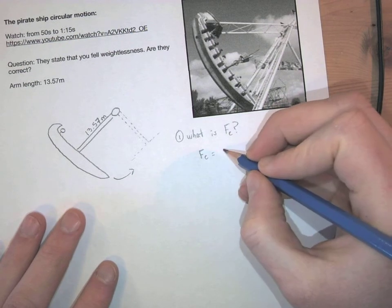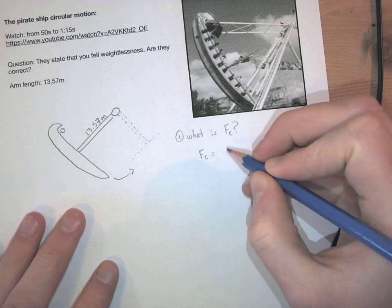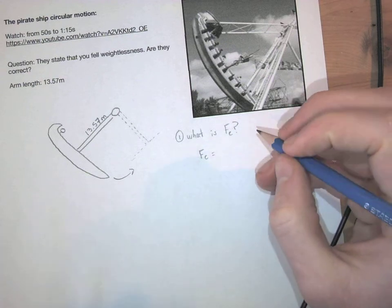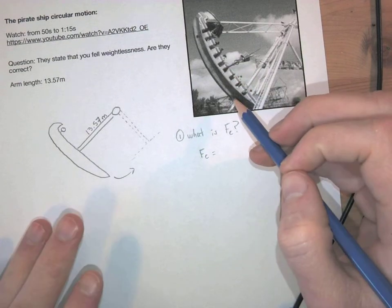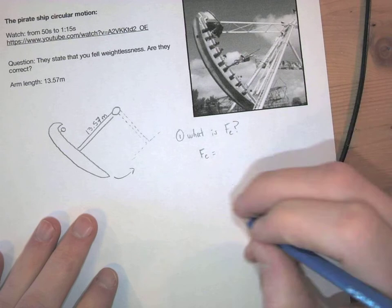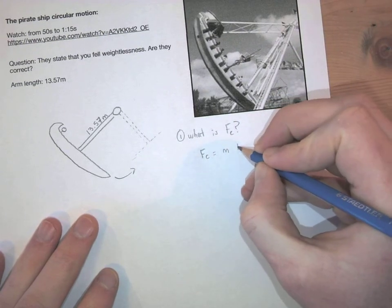m times v squared over r, or it's either m times 4 pi squared r over t squared. In this question I know I won't be able to find out what the velocity is just by looking at it. I'd have to measure that.